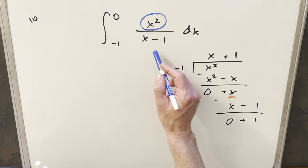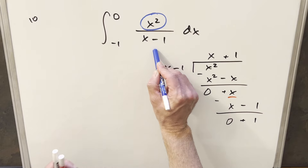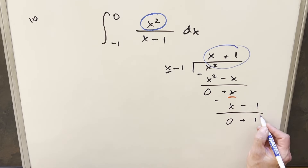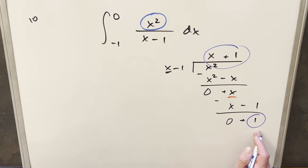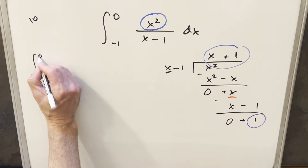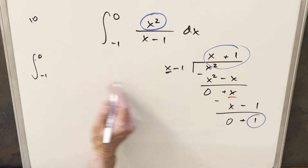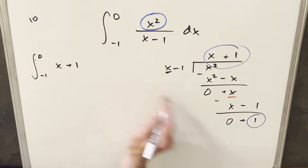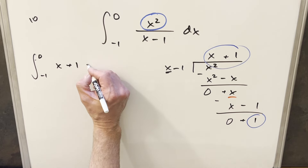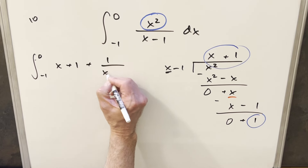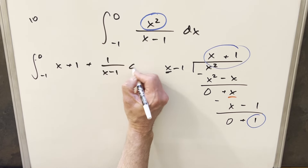This allows us to rewrite the integral. When we divide it out, we get x plus 1, and the remainder is plus 1 which goes over x minus 1. So rewriting with bounds minus 1 to 0, the integrand becomes x plus 1 plus 1 over x minus 1, dx.